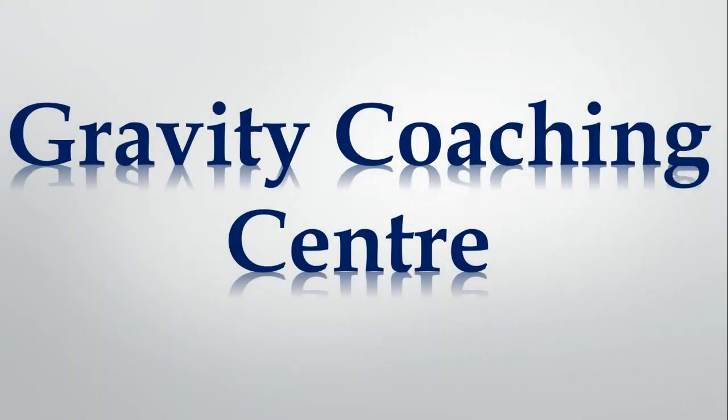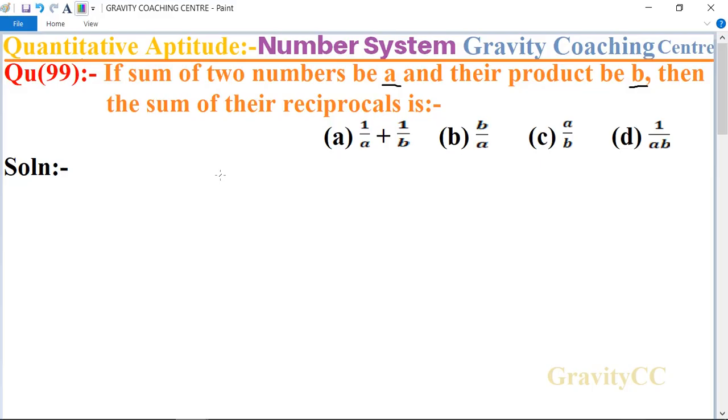Welcome to our channel Gravity Coaching Center. Quantitative Aptitude, chapter Number System, question number 99: If sum of two numbers be a and their product be b, then the sum of their reciprocals is? In this question, given that the sum of two numbers is a and their product is b, then the sum of their reciprocals is what?